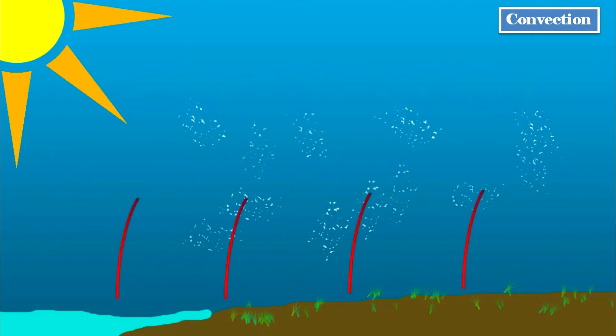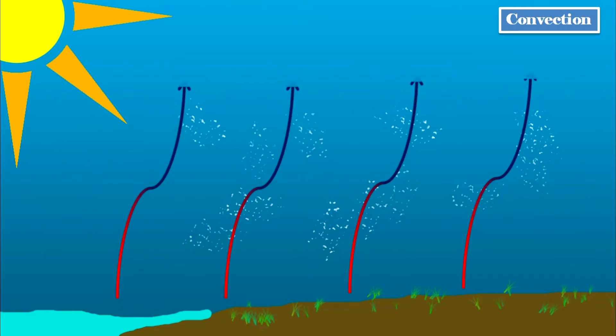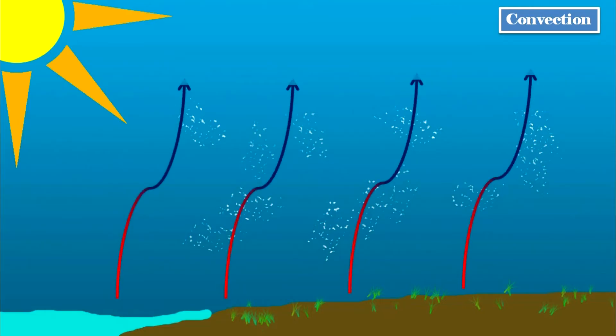This is called convection. The vapor continues rising higher and higher into the atmosphere, all the while getting colder and colder.